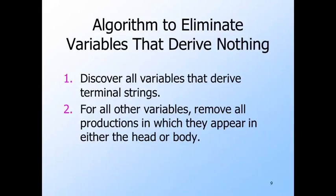The algorithm to eliminate variables that derive no terminal string is now simple. Use the algorithm we just described to find the variables that do derive terminal strings. Call the other variables useless. Then remove from the grammar all productions in which at least one useless variable appears — it doesn't matter whether the variable appears in the head, the body, or both.